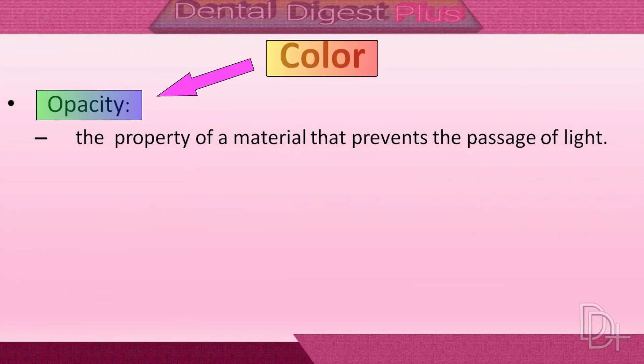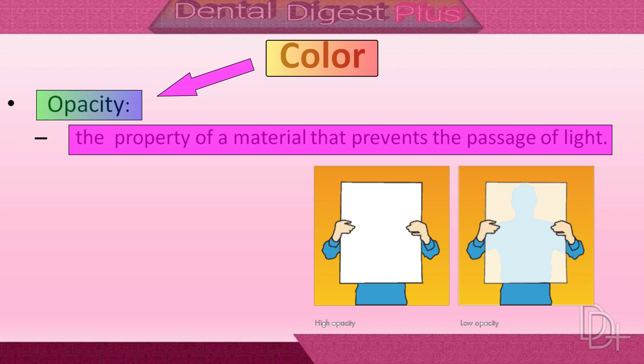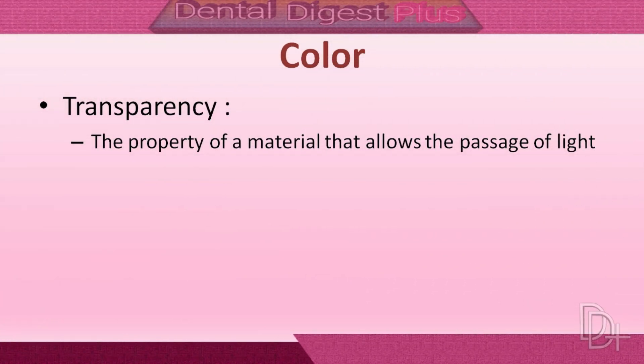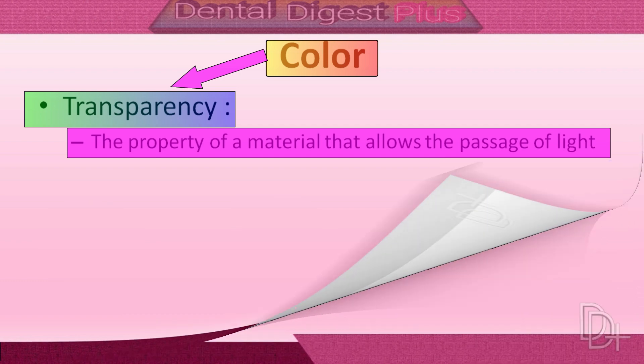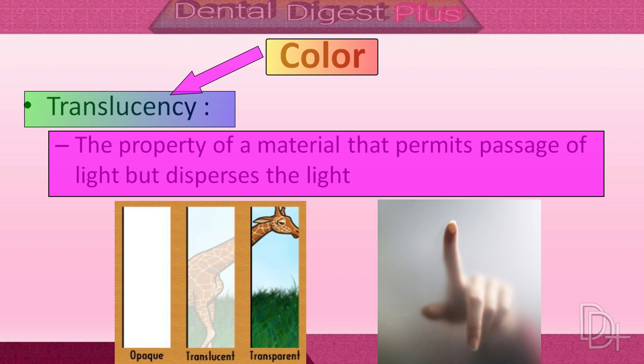Opacity is the property of a material that prevents the passage of light — it does not allow light to pass through an object. Transparency is the property of a material that allows the passage of light such that objects may be clearly seen through it. Translucency is the property that permits passage of light but disperses it so the object cannot be seen through.